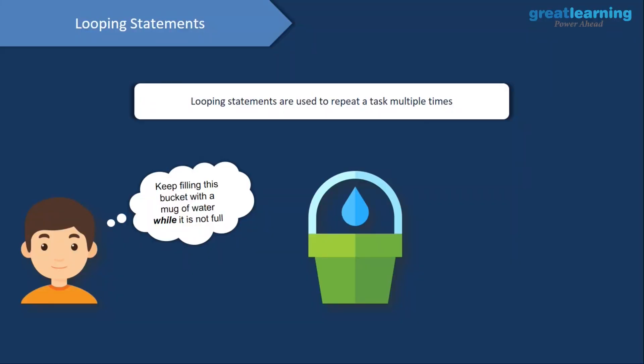Those were decision making statements. Now we'll head on to looping statements. These are used to repeat a task a certain number of times. We have a good example: let's say you have a bucket and you want to fill it up with a mug of water. First you fill up the mug and pour the water into the bucket, then you check if the bucket is full or not.